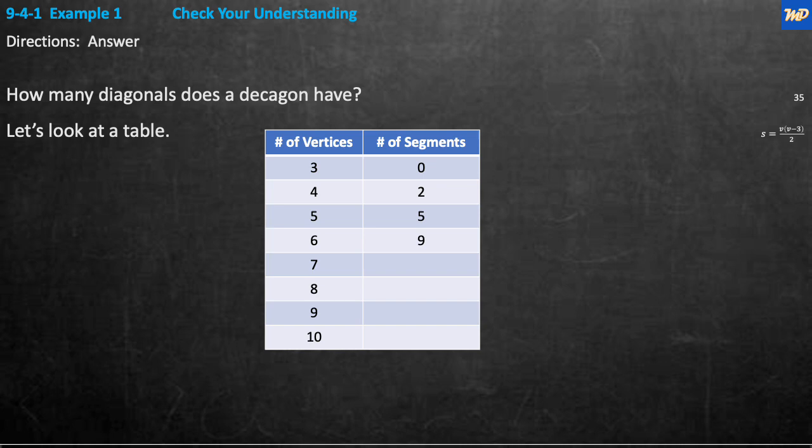Example one, check your understanding. It's your turn. See if you can answer this. How many diagonals does a decagon have? A decagon, well, that's a 10. Deca. Decimal 10. A decagon has 10 sides. Let's look at the table and see if we can figure it out. Go ahead, do it. When you get back, we'll do it together.